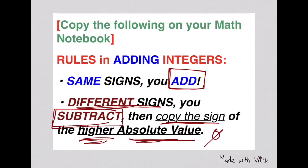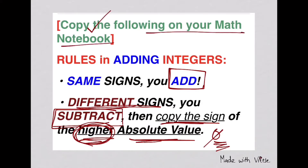Remember, absolute value — that's the distance of the number from zero. Whichever is higher, much farther from zero, you copy the sign of that number for your final answer. Now, let's move on with examples. But first, make sure you copy this on your notebook so you'll never forget the rules in adding integers.